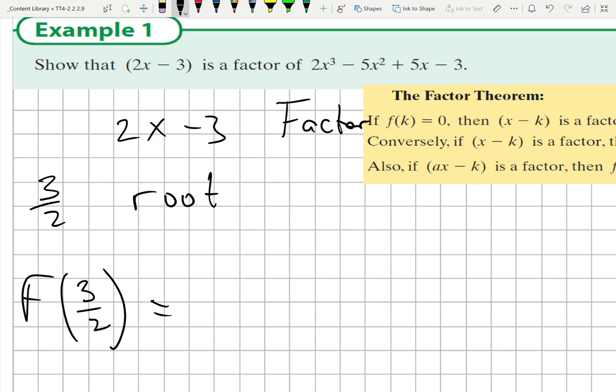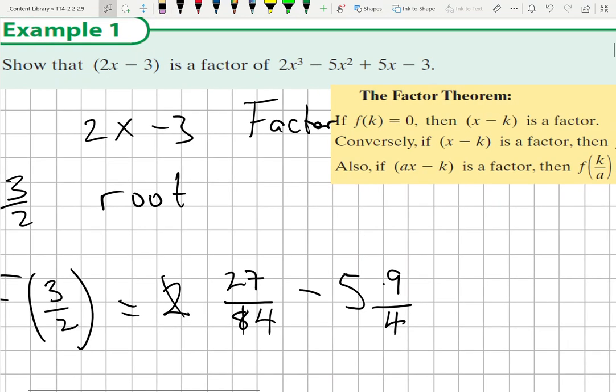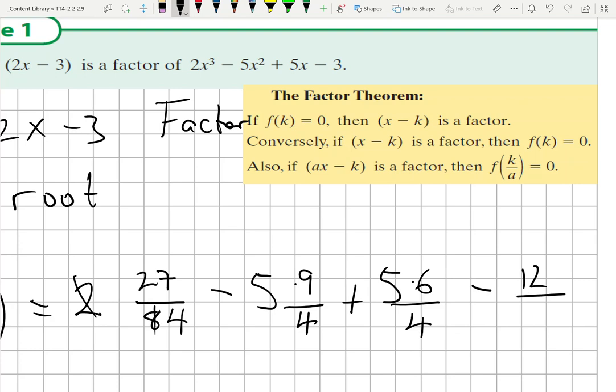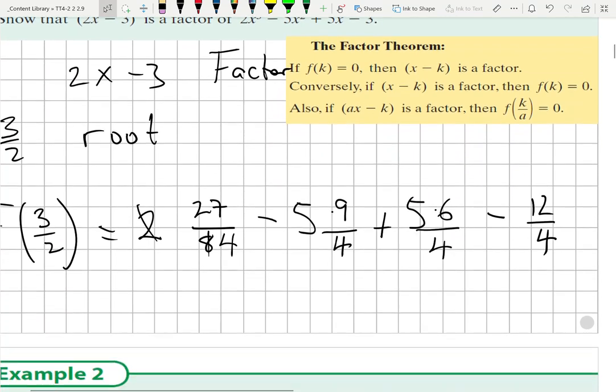Now there's a bit of heavy lifting without using technology. 3 cubed is 27, 2 cubed is 8. We'll cross that out to 4. Minus 5 times 9 over 4, plus 9 over 4, plus 5 times - now 3 over 2 is the same as 6 over 4 because I want quarters down below - minus 12 over 4, which is the cool way of writing minus 3 because now at least I have everything in 4s.